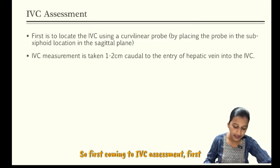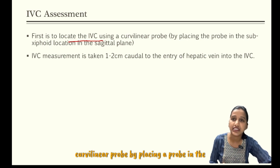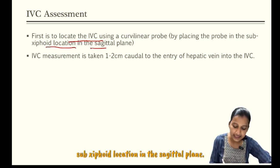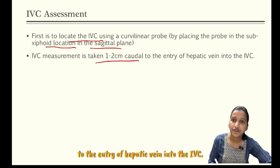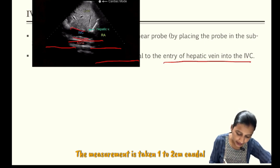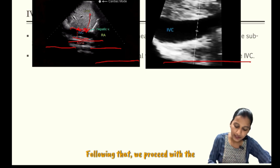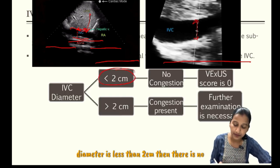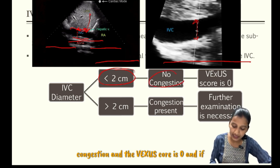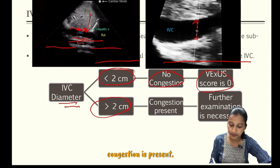First, coming to IVC assessment — the first step is to locate the IVC using a curvilinear probe by placing the probe in the subxiphoid location in the sagittal plane. IVC measurement is taken 1 to 2 centimeters caudal to the entry of the hepatic vein into the IVC. If the IVC diameter is less than 2 centimeters, then there is no congestion and the VEXUS score is 0. If IVC diameter is more than 2 centimeters, then congestion is present and further examination must be continued.